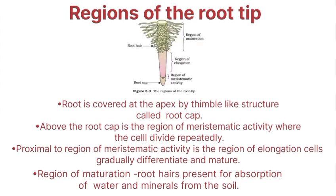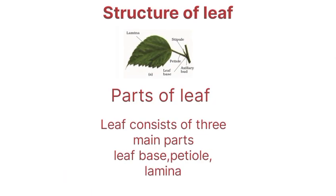Root cap is the region of meristematic activity, followed by the region of elongation, then the region of maturation, and the region of root hairs. Water is absorbed by root hairs. Structure of leaf: parts of leaf — three main parts.